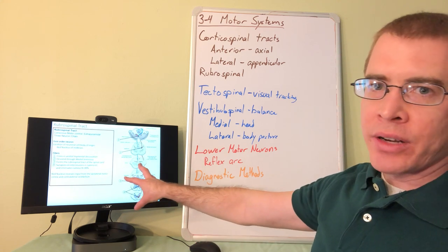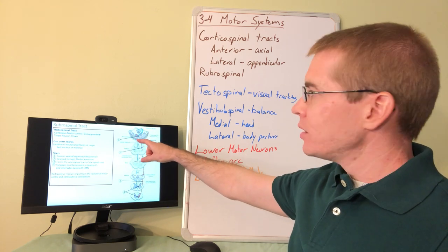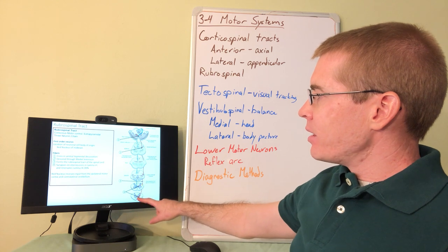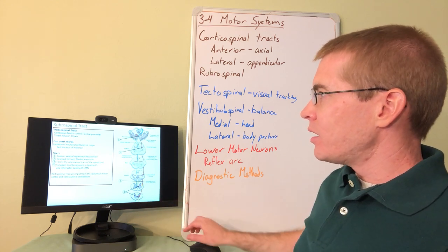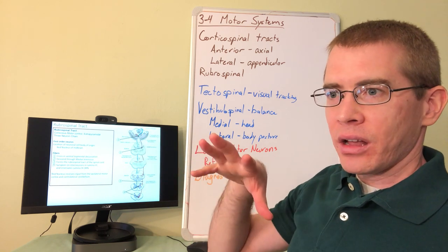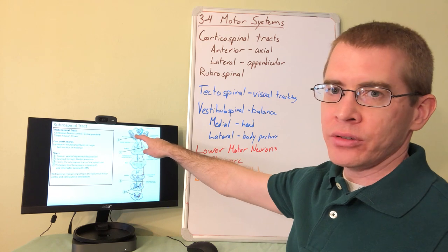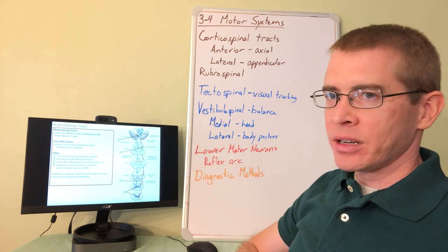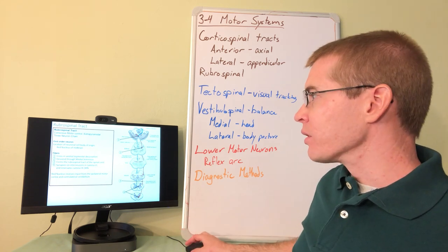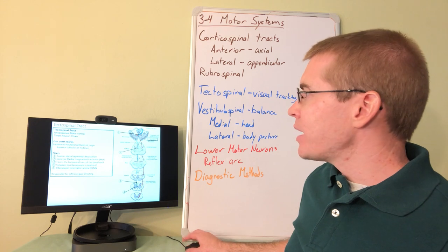The rubrospinal tract is named after the red nucleus — 'rubro' — with 'spinal' referring to the lower motor neuron. The path of the rubrospinal tract to the lower motor neuron is shown in this slide. Importantly, this is actually a conscious tract — an upper motor neuron comes down from the cortex and synapses on the red nucleus, making it technically a three-neuron chain if you include that cortical upper motor neuron.